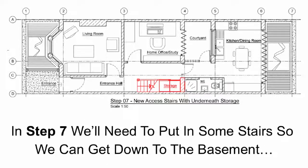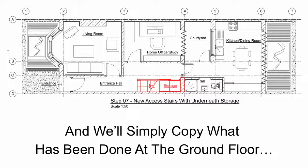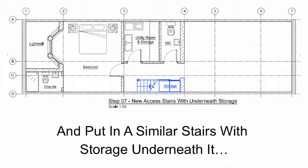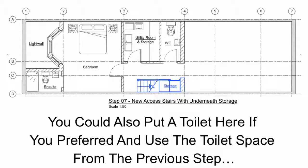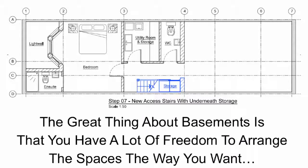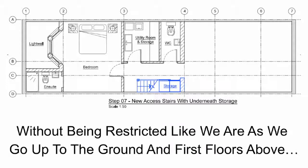In step 7 we need to put in some stairs so we can get down to the basement. We simply copy what is done at the ground floor and put in a similar staircase with storage underneath it. You could also put a toilet here if you preferred and use the toilet space from the previous step for something else. The great thing about basements is they have a lot of freedom to arrange the spaces the way you want, without being restricted like the floors above.